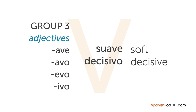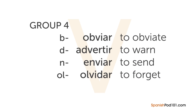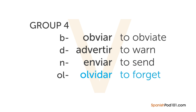Third, all adjectives that end in AVE, AVO, EVO, or IVO — for example, 'suave' meaning soft, and 'decisivo' meaning decisive. Fourth and last, after B, D, N, or OL — for example, 'obviar' meaning to obviate, 'advertir' meaning to warn, 'enviar' meaning to send, and 'olvidar' meaning to forget.